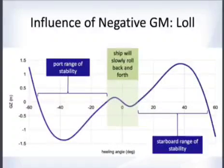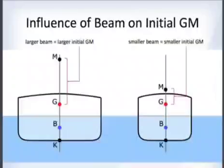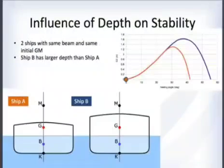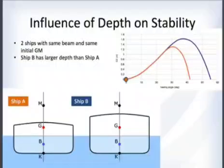We want to avoid negative GM. Beam has a direct effect on initial GM: a larger beam gives a larger initial GM, and a smaller beam gives a smaller initial GM. Depth also has an effect on stability.